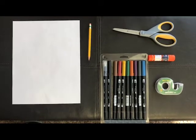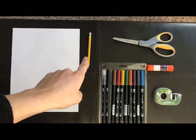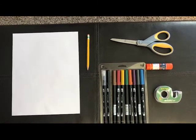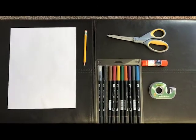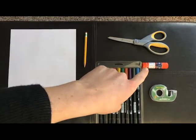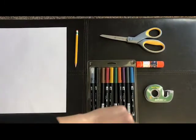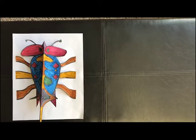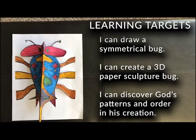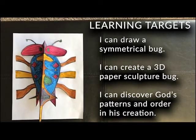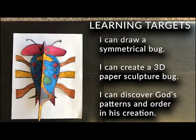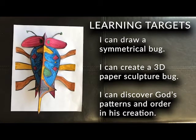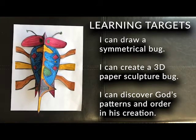So for this project you will need a piece of paper, a pencil, some markers or something else to color with. Color pencils or crayons could work too, or maybe even watercolor paint. You will need a pair of scissors and a glue stick. If you don't have a glue stick, some tape could work just fine as well. You have three learning targets for this project: I can draw a symmetrical bug; I can create a 3D paper sculpture bug; and I can discover God's patterns and order in his creation.